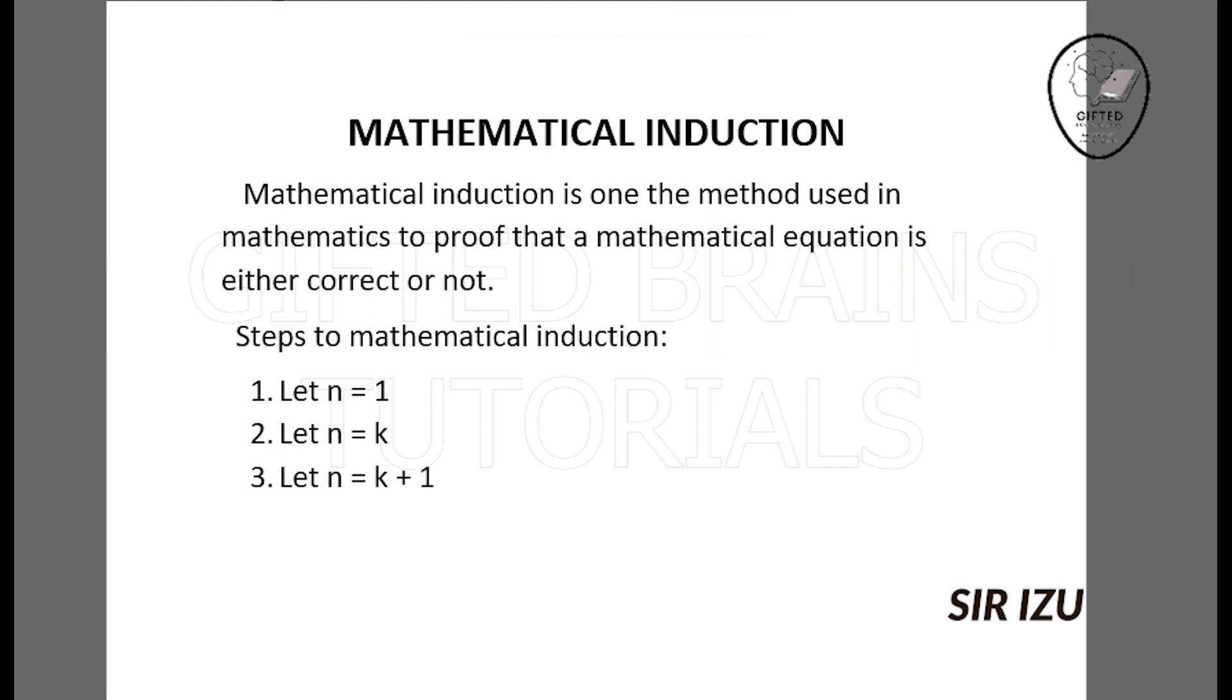There are steps in using mathematical induction. The first step is to let n equal 1. When n equals 1, your left-hand side should give you your right-hand side. If that happens, you can move to step 2. If step 1 doesn't work, just write that it cannot be proved by mathematical induction.